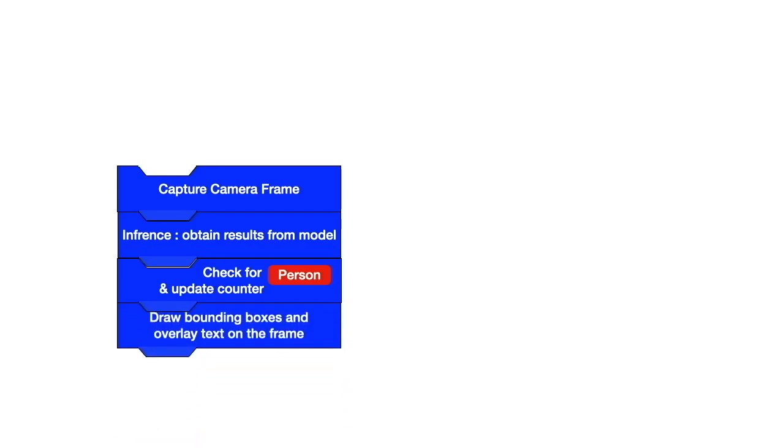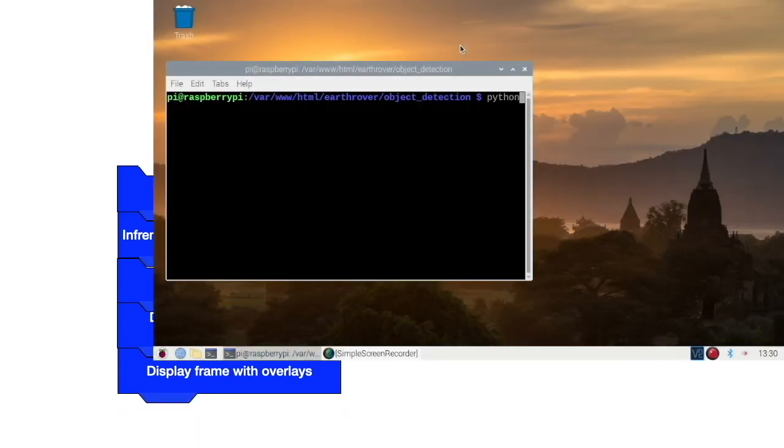The process starts with capturing the camera frame and performing inference. In this stage the results are checked for the presence of a fixed object, i.e. person. Then the frame is populated with overlays and the frame with added information is displayed locally on Raspberry Pi.